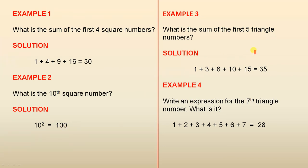Example 3: What is the sum of the first 5 triangle numbers? These are the first 5 triangle numbers as we saw on the previous slide. When you add those up you get 35. Example 4: Write an expression for the 7th triangle number. What is it? You add all those numbers up there, that will give you the 7th triangle number, and it is 28.